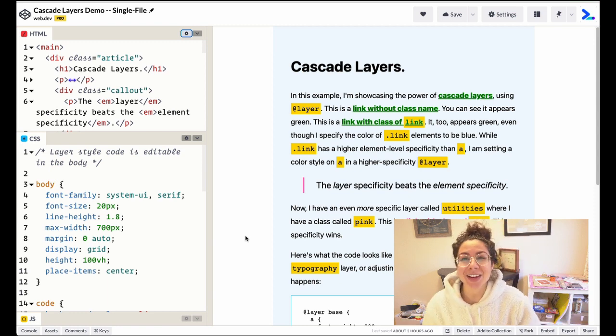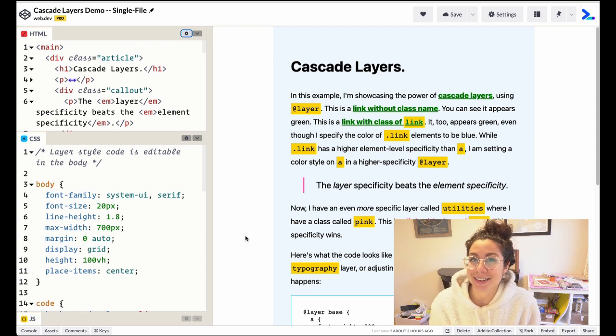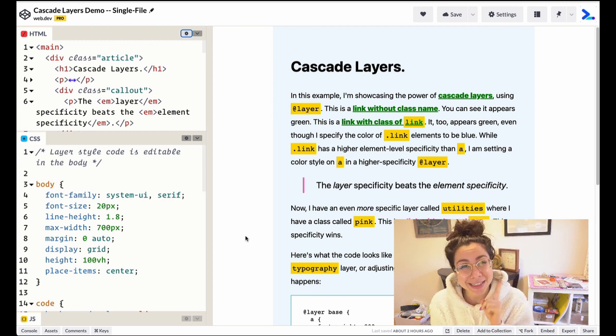Cascade Layers are a new CSS API which is hitting your browser soon because it is launching in Chromium 99, which is the current version of Canary, and it's in Firefox 97, which I believe is nightly.